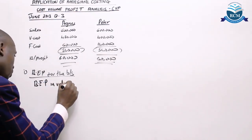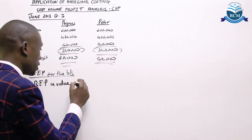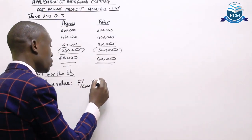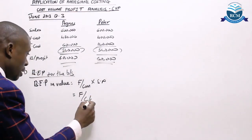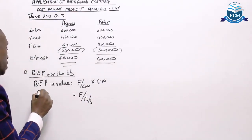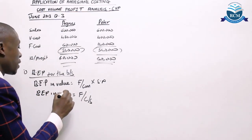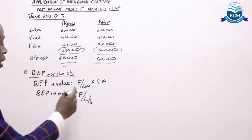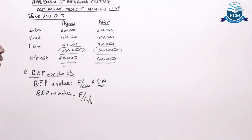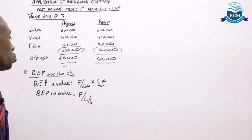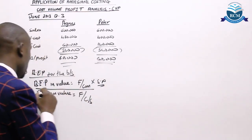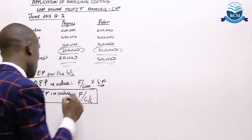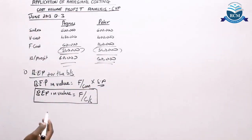We had two methods of determining the break-even point in value. The first method: fixed cost divided by contribution margin times selling price. The second method: fixed cost divided by CS ratio. To use the first method, I need the selling price per unit, which is not given. What I am given is the total sales, so the best method to use is break-even point equals fixed cost divided by CS ratio.